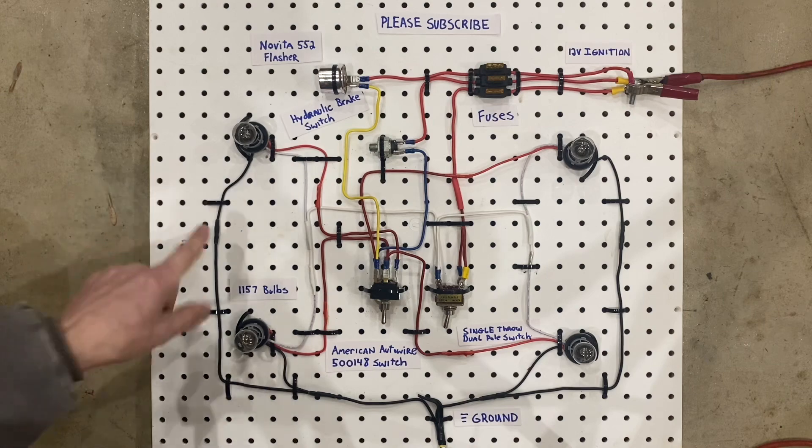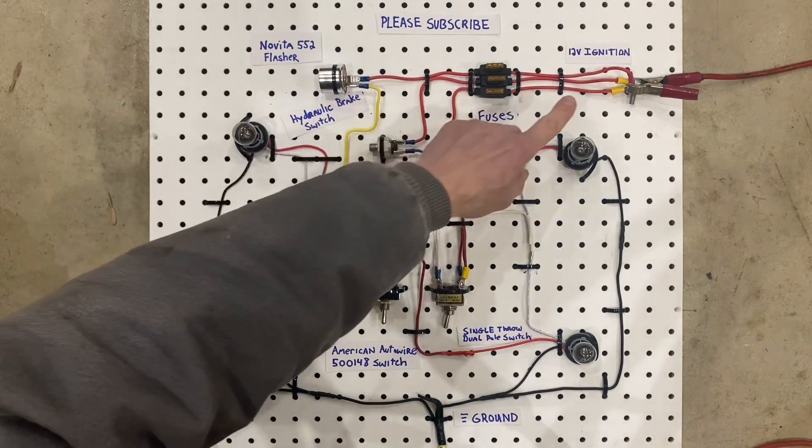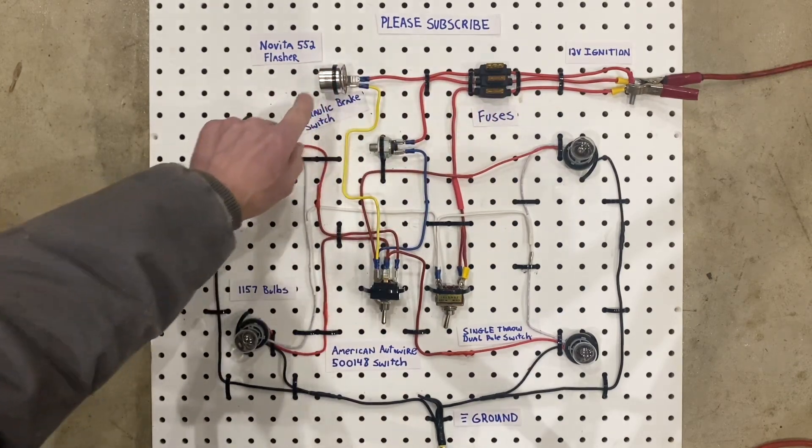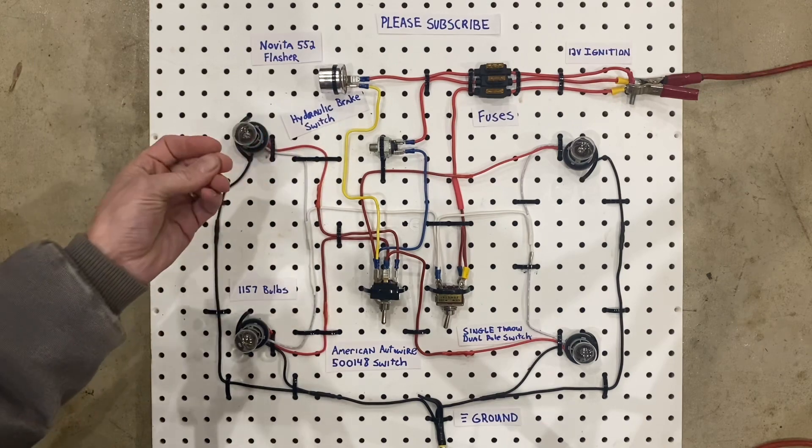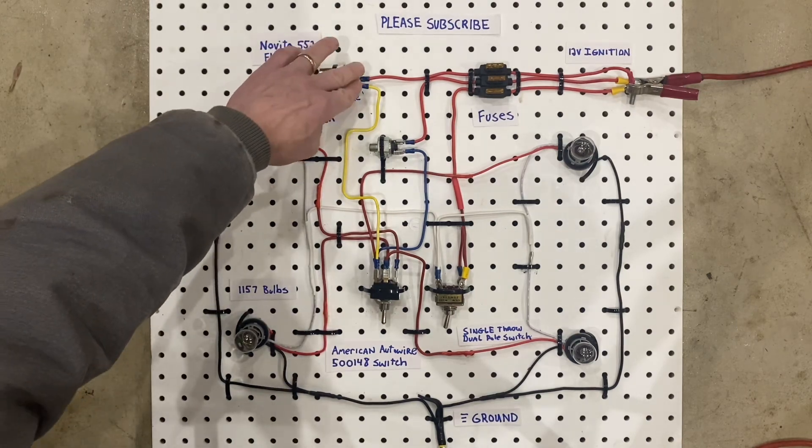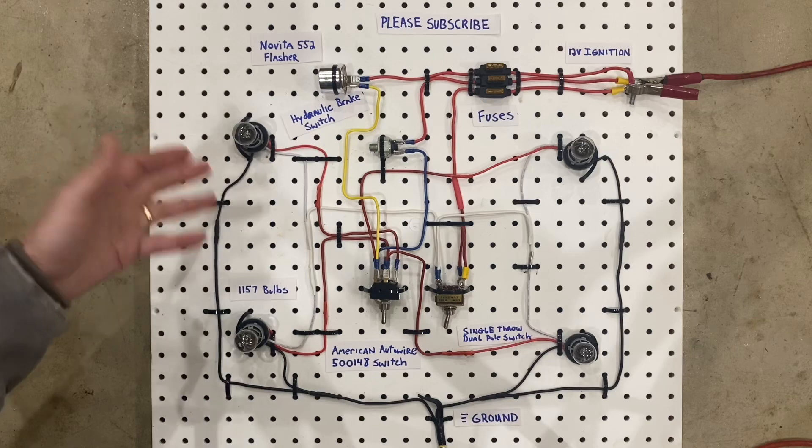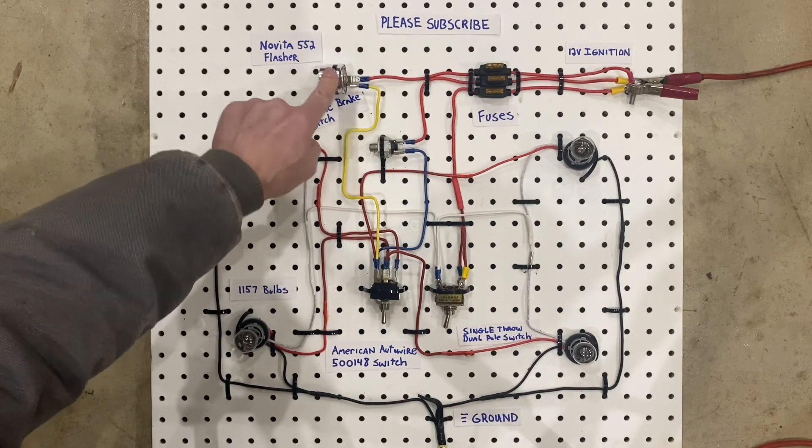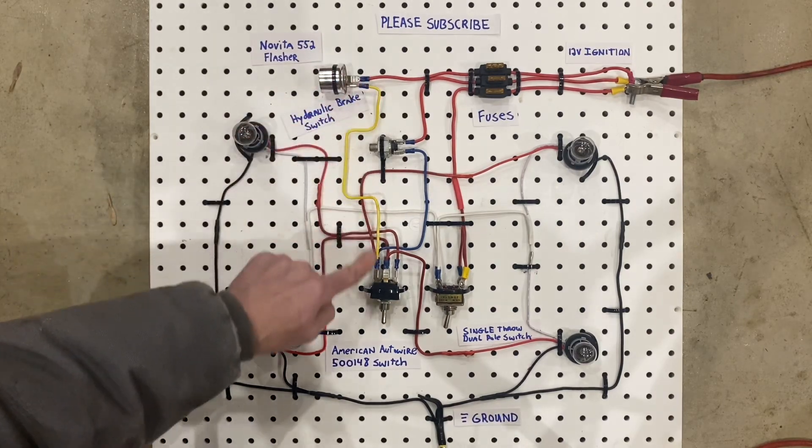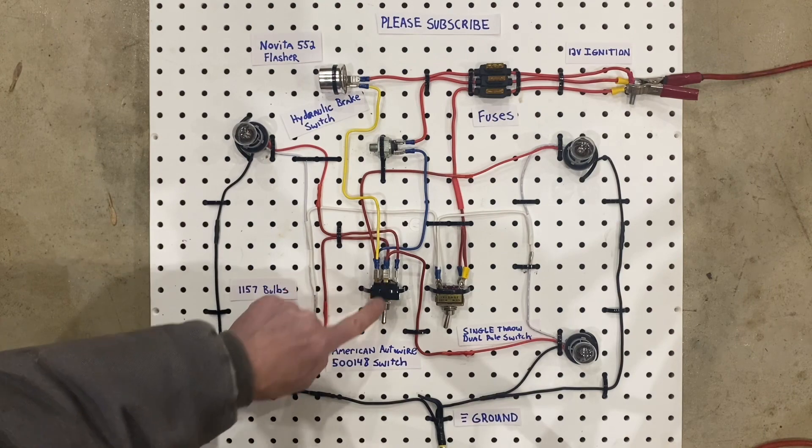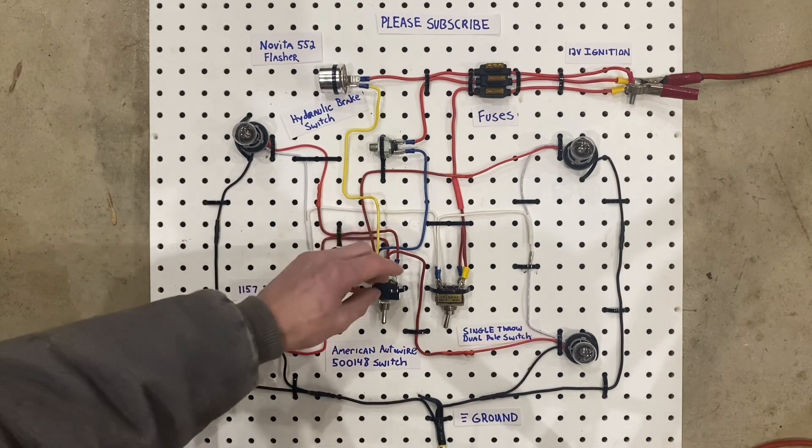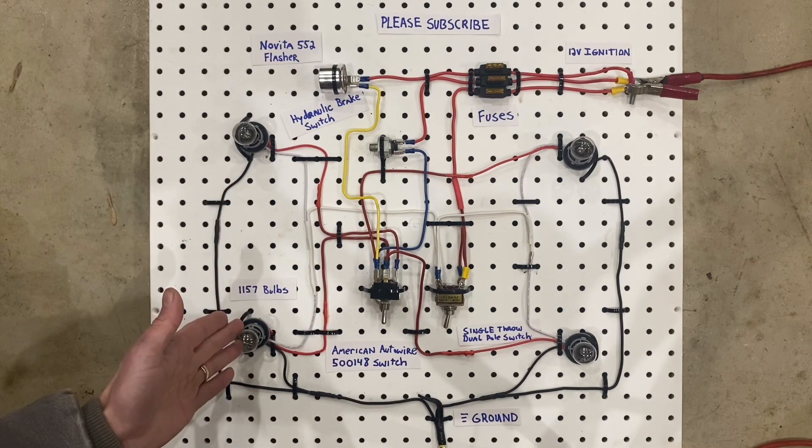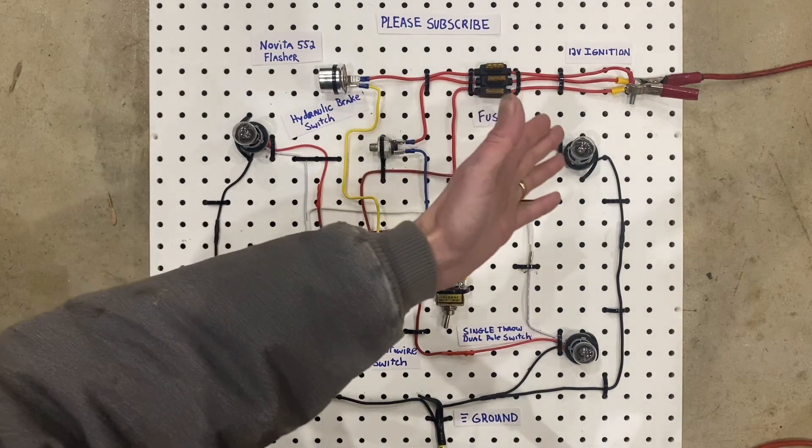Now the last part of the circuit is the turn signals. Just like the others, you start at the ignition, come through a fuse, right over to the turn signal flasher. All the flasher does is it makes the bulbs blink. If you didn't have this flasher here and you just connected these wires, the bulbs would just turn on or they would turn off. They wouldn't flash at all. We'll have power come in the flasher and then it goes out of the flasher through this yellow wire down to the 500-148 switch. Depending on the conditions, it's going to do one of two things. It's either going to make the left turn signals flash or it's going to make the right turn signal flash.